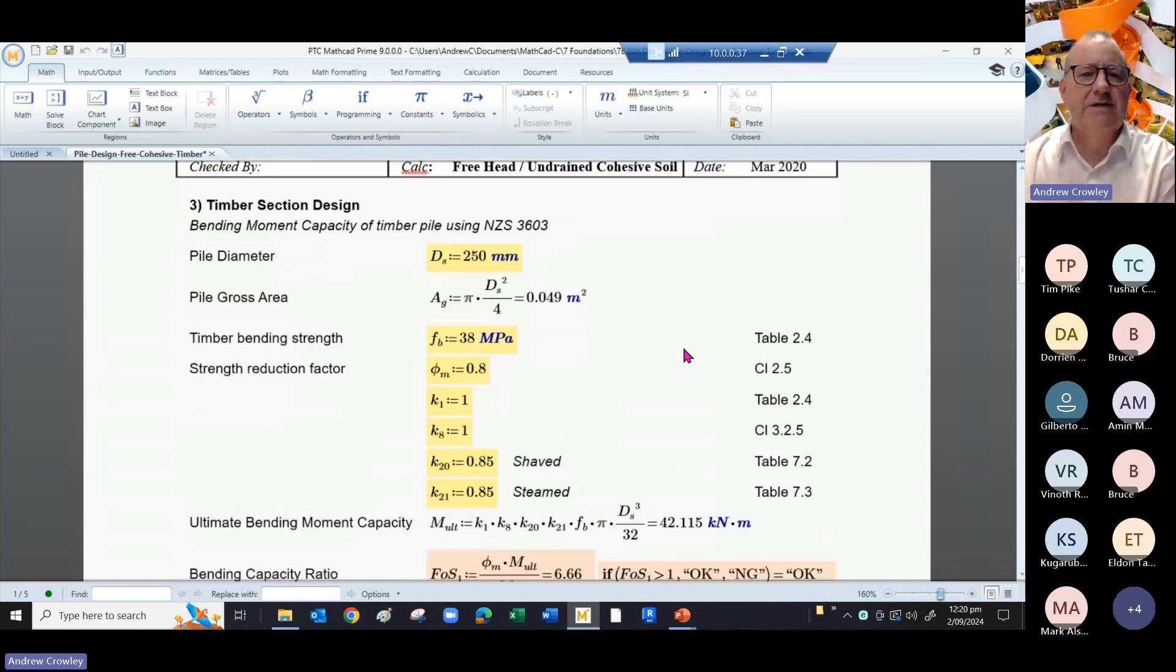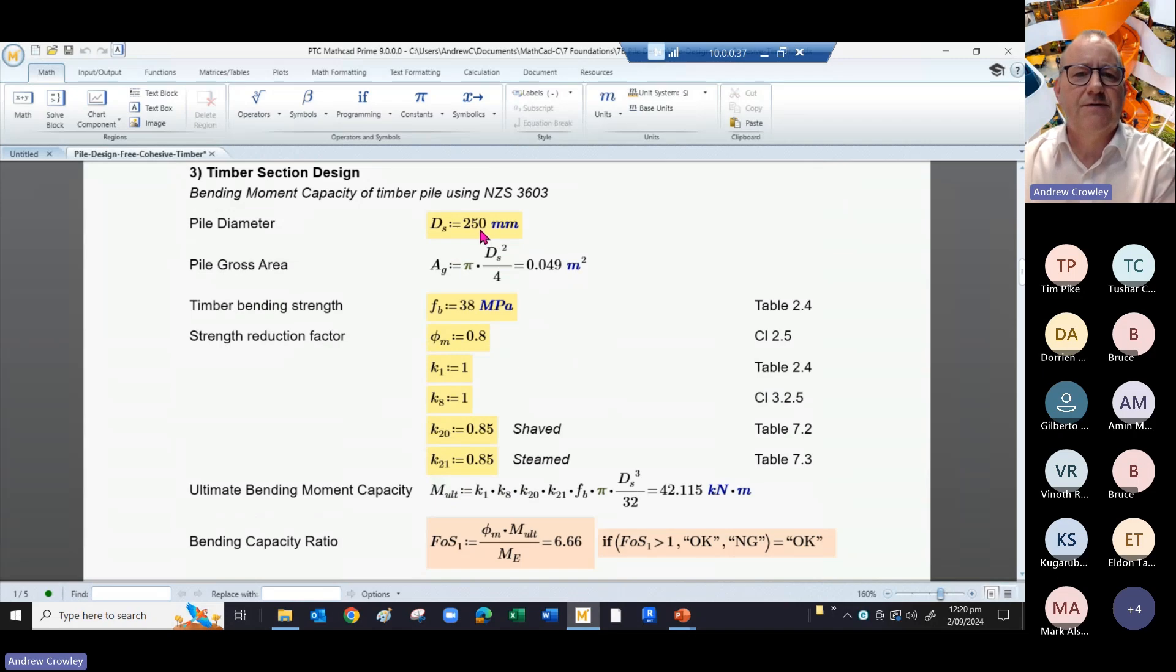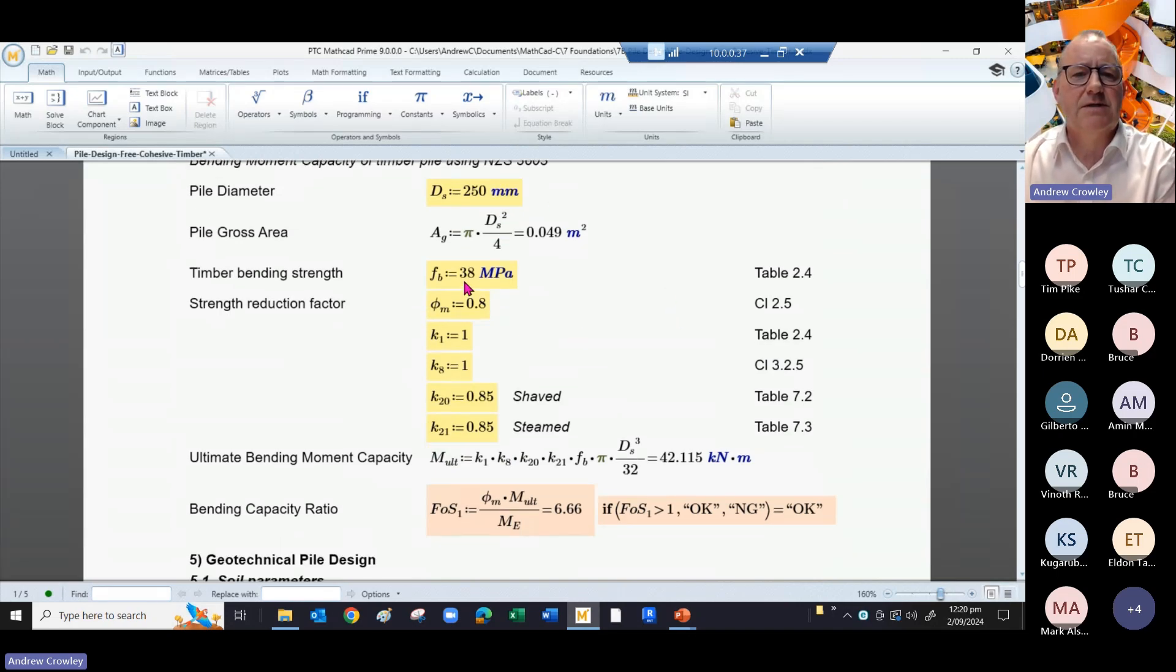We're looking at a timber section designed in accordance with NZS 3603. We're taking the pile diameter as 250 millimeter diameter, and the bending strength is 38, taken from Table 4 of the code.